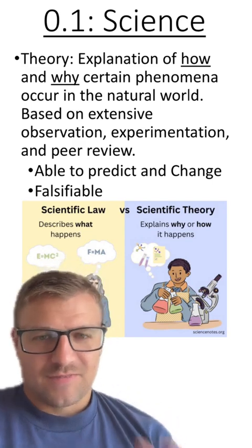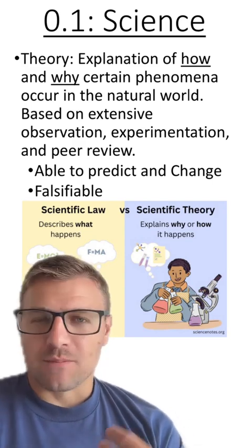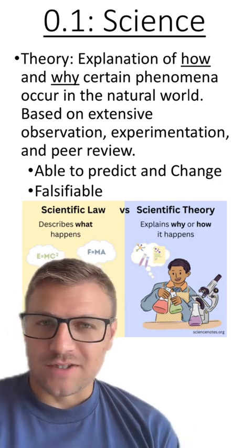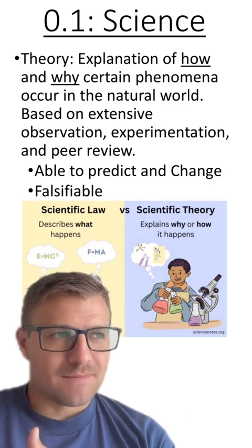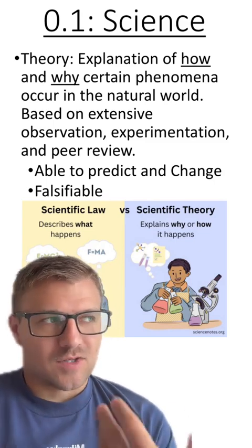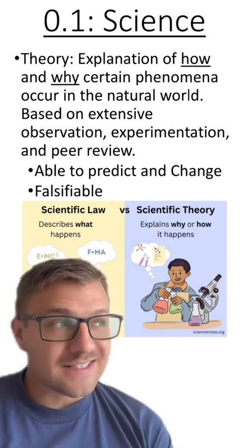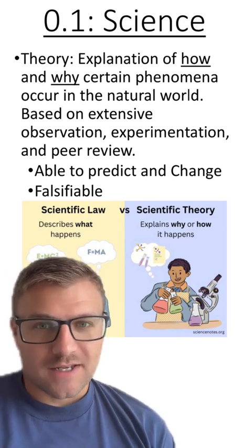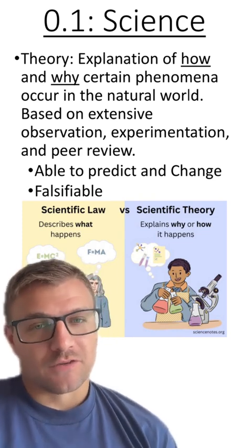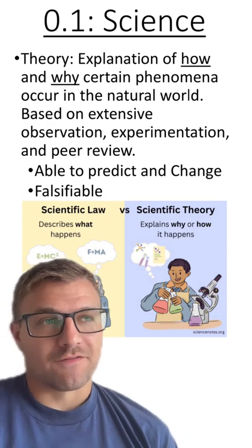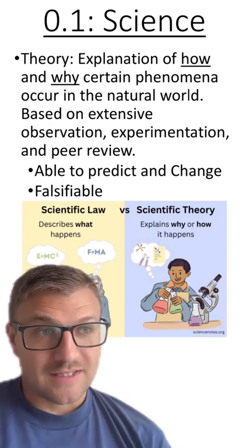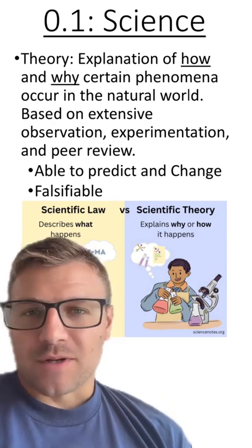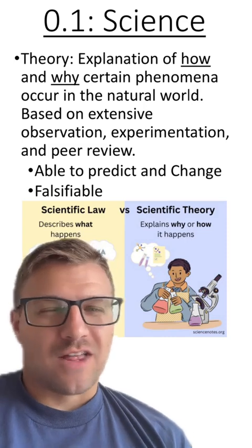Theories often do change, they become more accurate, they even change how they understand or explain certain concepts. But it doesn't mean that science is wrong. A lot of times our scientific method leads us to become more accurate with our understanding of certain processes. Something else that I think is really important for people to understand about theories is that they are falsifiable, which means they can be disproven. I'm going to go into a deeper understanding of what a theory is using different analogies in a little bit.